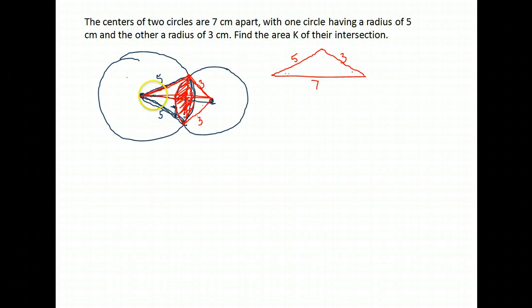My goal here is to find the measure of this angle and this angle, because once I have the angle here I can double it to find the full angle, and when I have this angle here I can double it to find this angle, find the area of each of their segments and then add them together. Notice I said segment and not sector. Let's first find the angles that we need. I'm going to label this triangle.